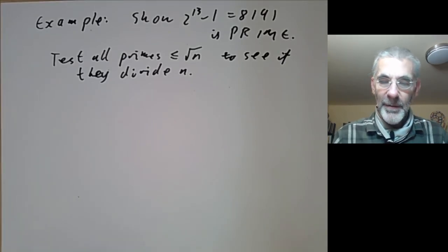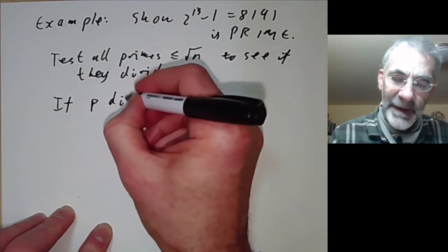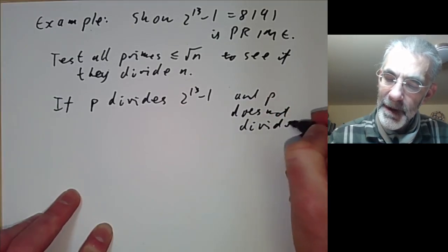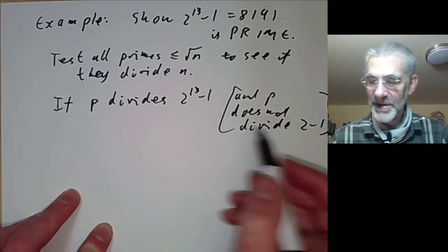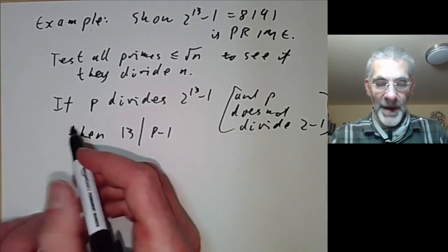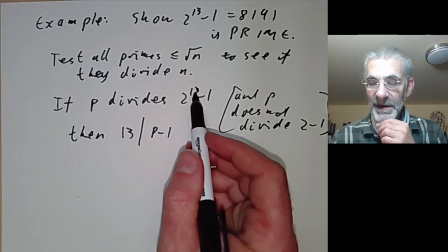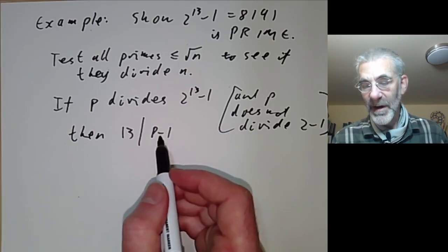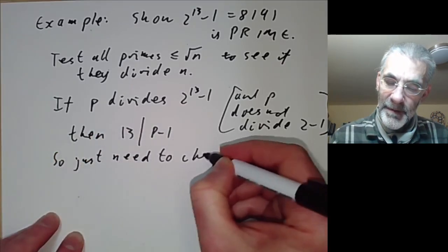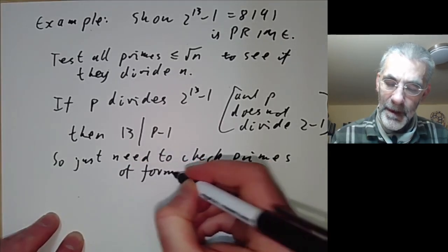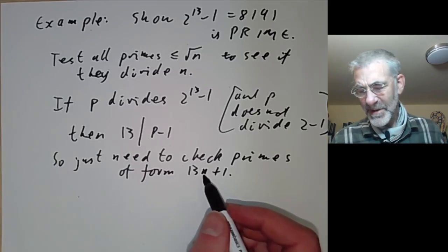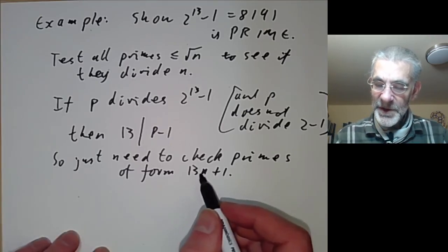If p divides 2 to the 13 minus 1 and p does not divide 2 minus 1 (which is vacuous since no primes divide 1), then 13 divides p-1 — so 2 has order 13 mod p, meaning 13 must divide p-1. We just need to check primes of the form 13n+1. Since n must be even, the candidates are 27 (not prime), 53, 79, and then the next ones are bigger than the square root of 8191.